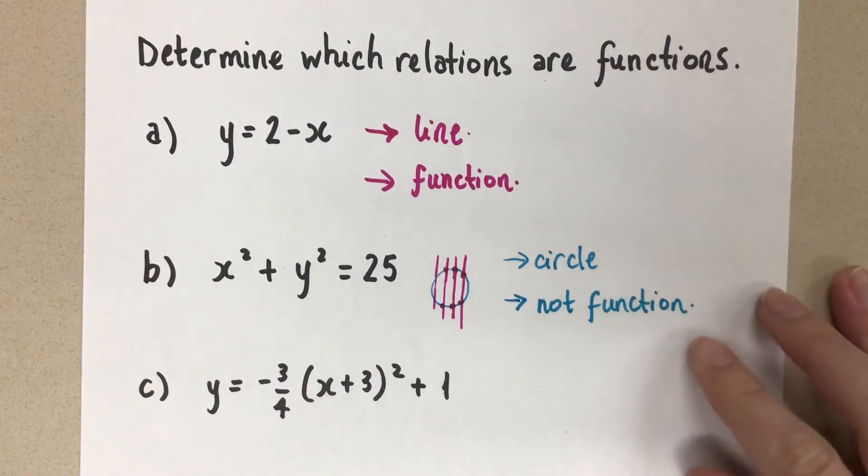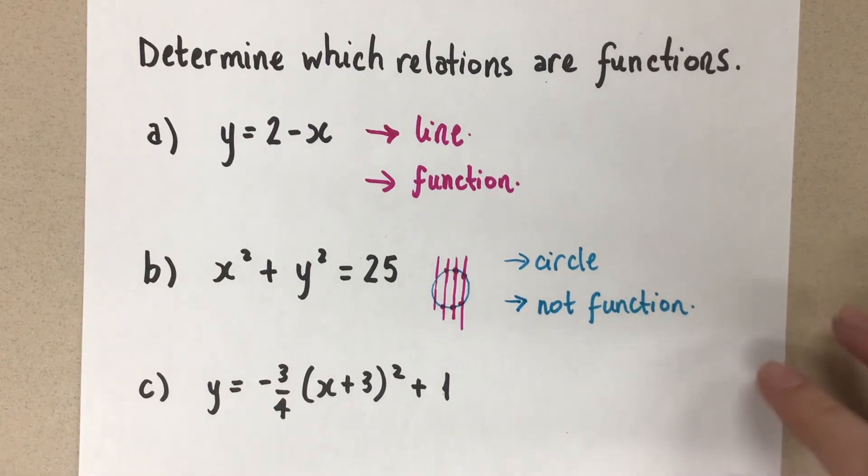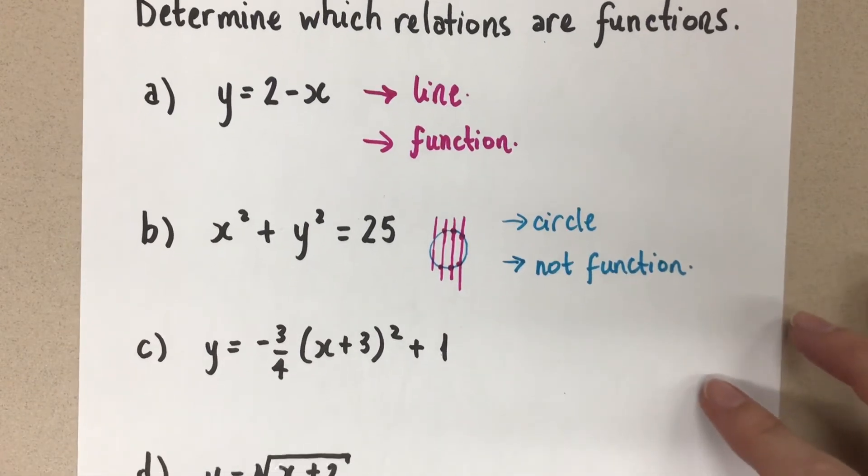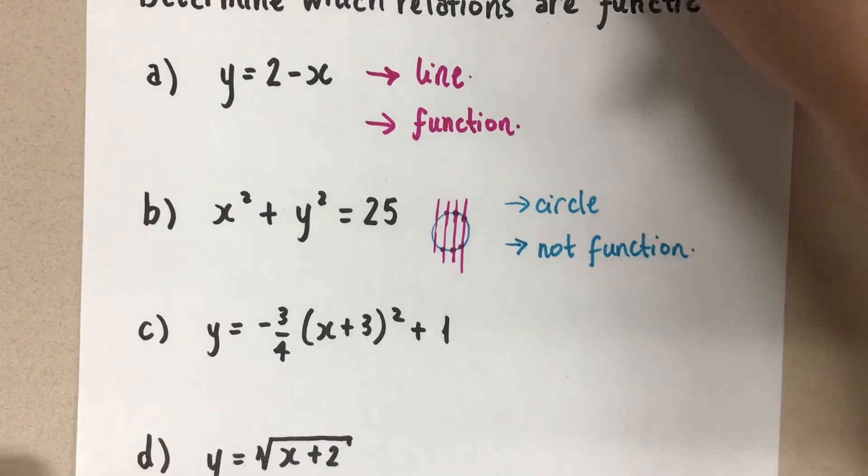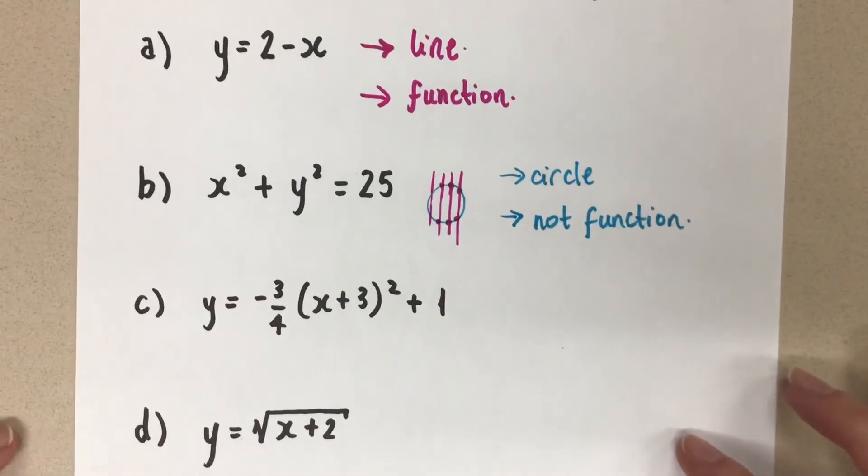We can also say it fails the vertical line test, and therefore it is not a function. So there isn't really a calculation that we do here. It's more of just reasoning and really thinking about what we're given within that equation. Okay, let's look at the next one.